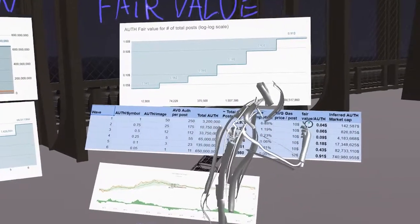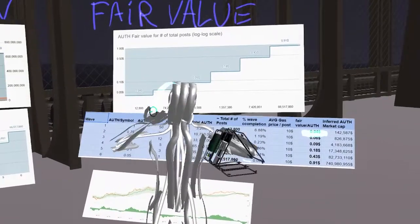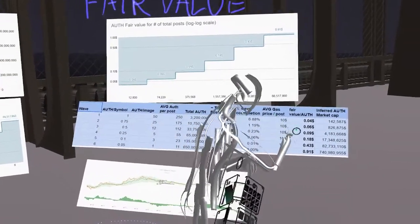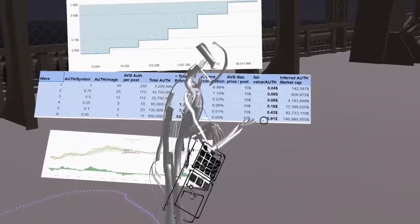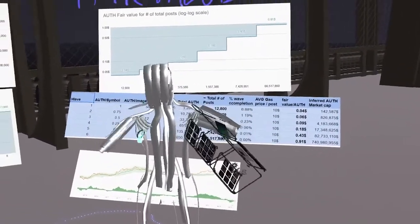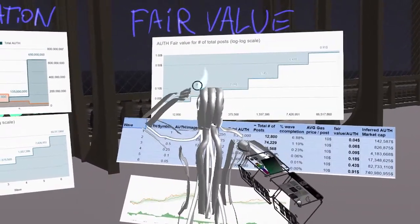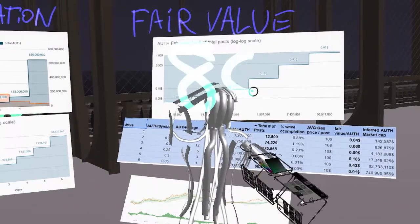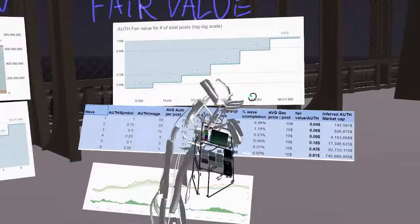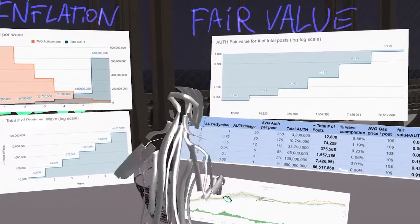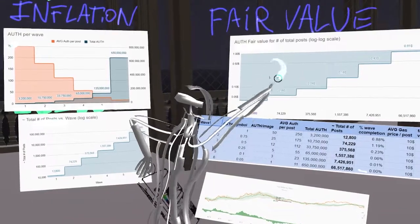So in phase one, the fair value is four cents. In phase two it climbs to six cents. In phase three to nine, eighteen, thirty-three, all the way to almost one dollar. Currently the auth token is trading on Uniswap at eight cents as we discussed. This corresponds to a fair value of phase three.